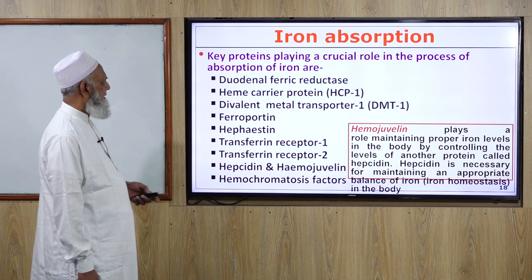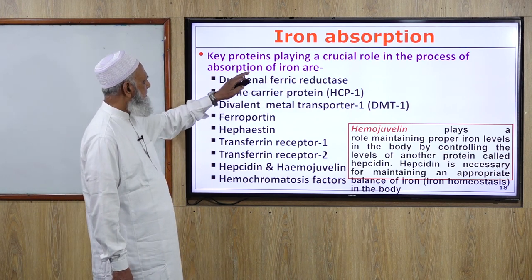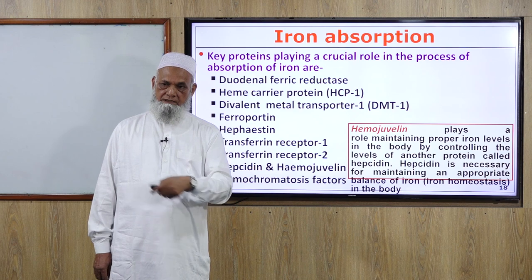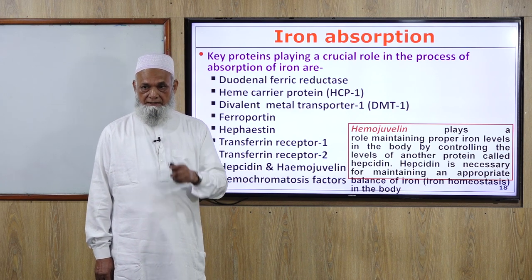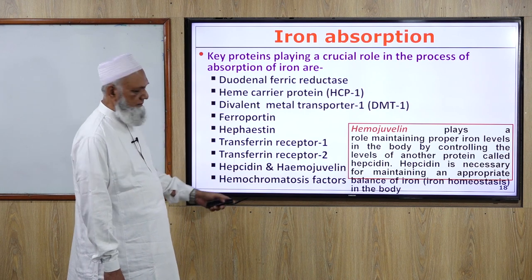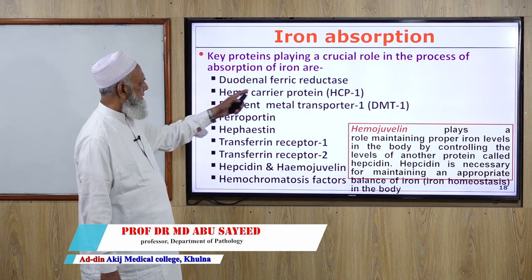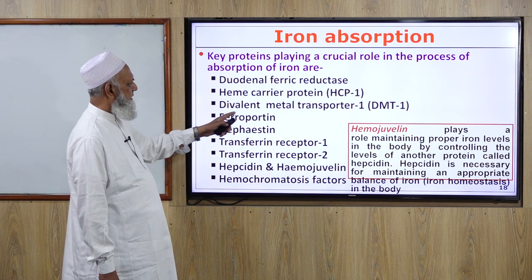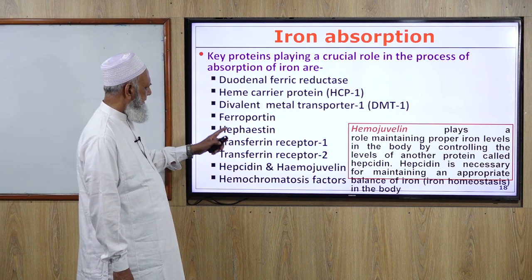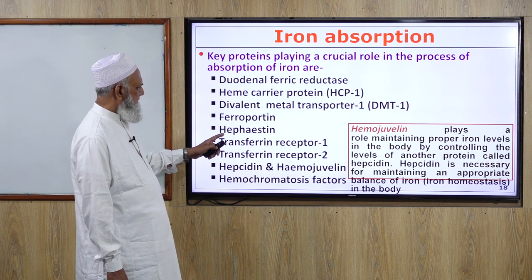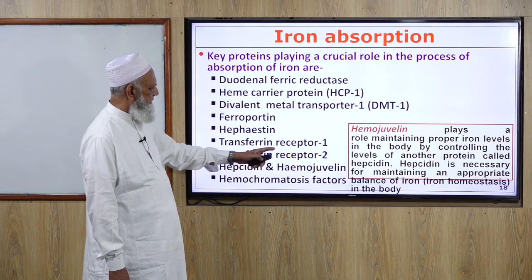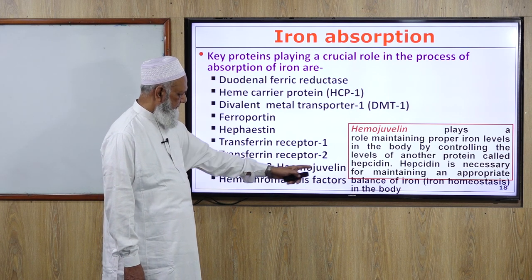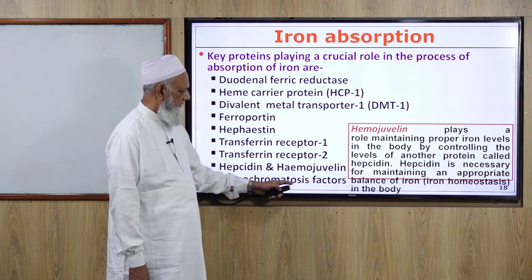Key proteins playing a crucial role in the process of iron absorption include: duodenal ferric reductase, heme carrier protein HCP-1, divalent metal transporter DMT-1, ferroportin, transferrin receptor 1, transferrin receptor 2, hepcidin, hemojuvelin, and hemochromatosis factors.